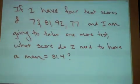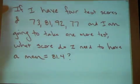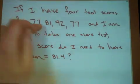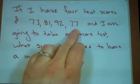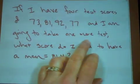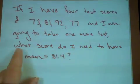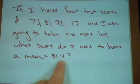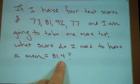Now let's take this idea and use it in a practical sense. If I have four test scores of 73, 81, 92, and 77, and I know I'm going to take one more test, I want to know what score would I need to have a mean of 81.4. Maybe that's my particular teacher's cutoff for a B minus. It's an odd number, but that's okay.